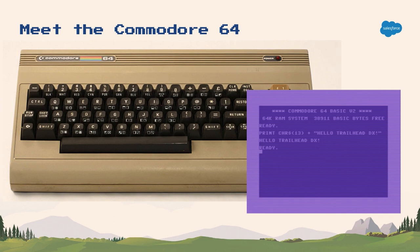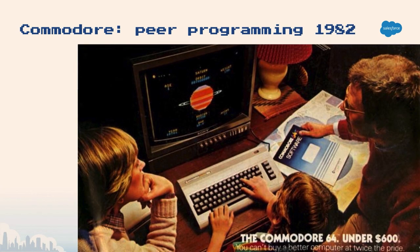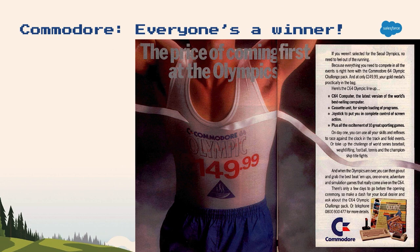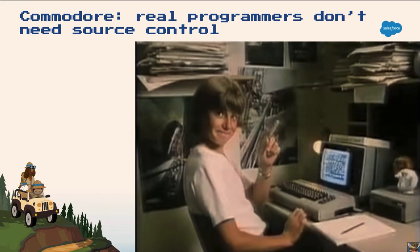There's another reason why we picked the Commodore. Commodore has some amazing adverts and they're all on YouTube now — you can check them all out and we did. These guys were so ahead of their time; they were doing pair programming in 1982. Even before Instagram, they were selling the Commodore lifestyle. And with Commodore, everyone's a winner — one ad says even if you didn't get picked for the Olympics, you can stay at home in your bedroom and play games on your Commodore instead. Everyone's included.